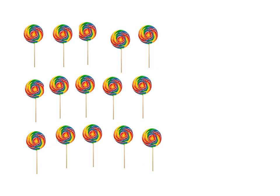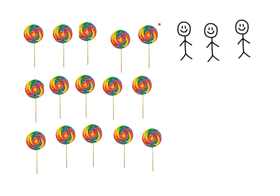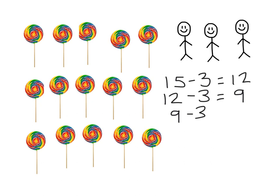Okay, let's look at doing that same number story using my strategy of repeated subtraction. I have 15 lollipops and I want to share them equally amongst my 3 people so that they get the same amount each. So I'm going to start with 15 and take away 3, because that's how many people I'm sharing amongst — that gives me 12. Now 12 take away 3 gives me 9. Then 9 take away 3 equals 6, then 6 take away 3 equals 3, and 3 take away 3 equals 0.